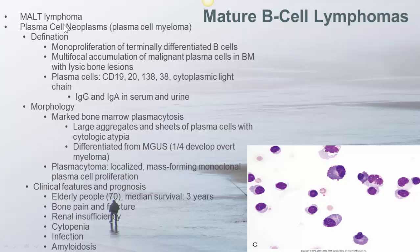Plasma cell neoplasm, also known as multiple myeloma, is a monoclonal proliferation of terminally differentiated B-cells. It is a multifocal accumulation of malignant plasma cells in bone marrow with lytic bone lesions — so you're going to see holes in the bones. The malignant plasma cells express CD19, CD20, CD138, and monoclonal cytoplasmic light chain.